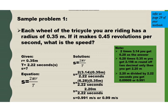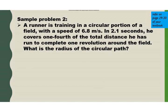For the next problem: A runner is training in a circular portion of a field with a speed of 6.8 meters per second. In 2.1 seconds he covers one-fourth of the total distance he has to run to complete one revolution around the field. What is the radius of the circular path? In this problem we need to manipulate the equation first to solve for the radius.